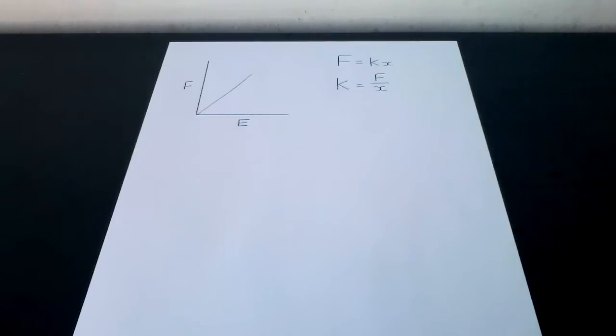So the graph shows that force is proportional to extension. This is what is known as Hooke's Law. It can be written as F equals KX, where F is the tension acting on the spring, X is the extension, and K is the gradient of the graph. It is known as the spring constant.